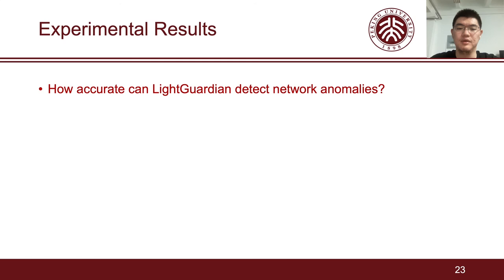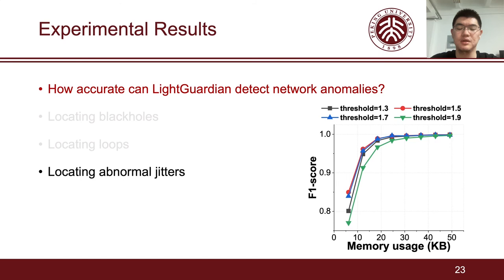The second issue is how accurate can Light Guardian detect network anomalies. We use Mininet to simulate three network anomalies: forwarding black holes, forwarding loops, and abnormal jitters caused by link congestion. Our results show that Light Guardian can pinpoint these anomalies with high accuracy.